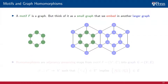Another example of a motif is the hexagon motif, which is in fact a cycle with six nodes. The hexagon motif can be embedded as shown, and it can also be embedded in multiple places. Likely, the number of ways in which we can embed the hexagon motif is different from the number of ways in which we can embed the cycle or star motif.